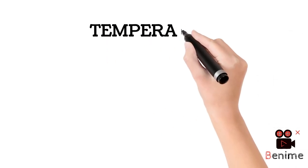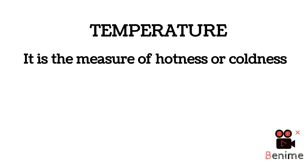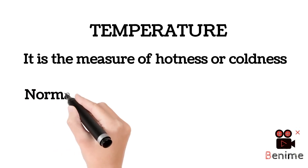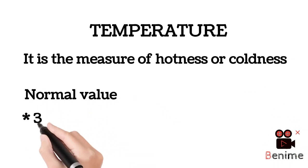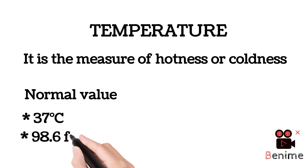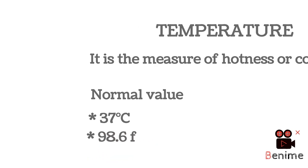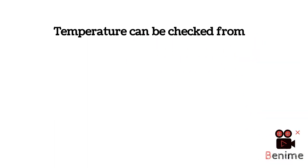So what is temperature? It is the degree of hotness or coldness. The normal range is 37 degrees Celsius or 98.6 Fahrenheit, depending on which scale you use. There are several measuring sites for temperature, but the common ones are: